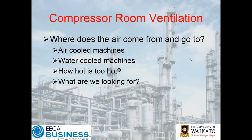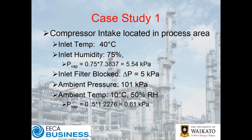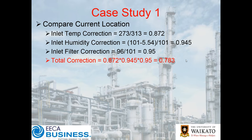The other thing to think about is the ventilation of your plant room — is it too hot and what will it do? Here's an example: we have a compressor intake located in a process area at 40 degrees, 75% RH, which we've already crunched the numbers on. We add into that a blocked filter because it's wet — there's debris and it's clogged the filter. We have an ambient pressure of 101 kPa and an ambient temperature outside of 10 degrees, 50% RH. So our inlet temperature correction is 273 over 313, giving 0.872, and our humidity correction uses the vapour pressure at those conditions.